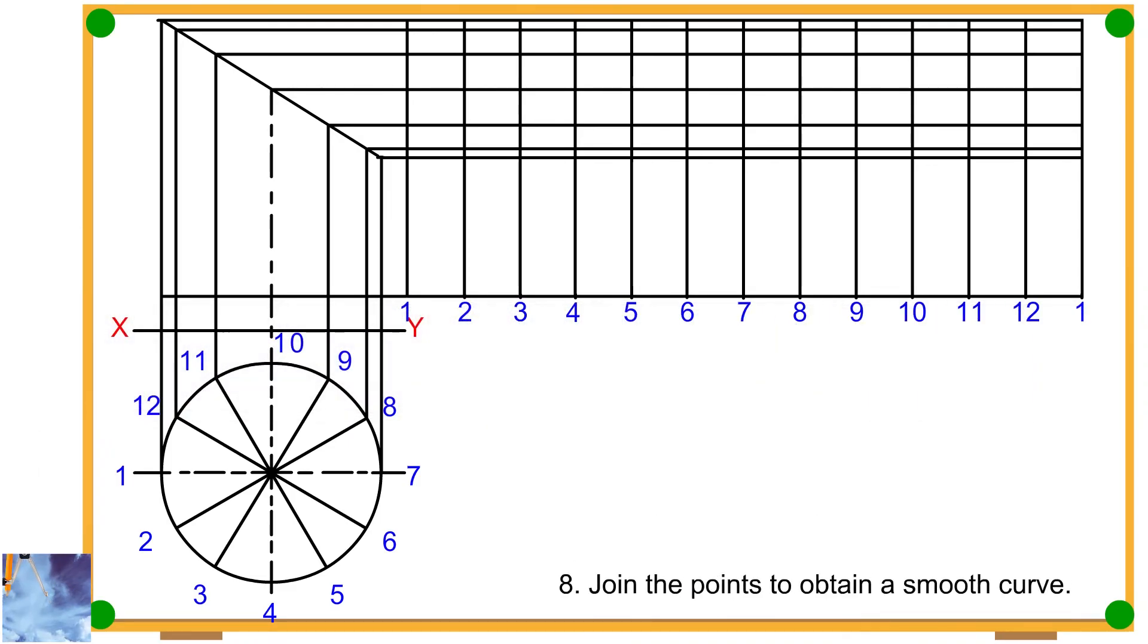Step 8: Join the points to obtain a smooth curve. During this step, make sure to locate each point at its appropriate place. If you plot even a single point incorrectly, your entire curve will be wrong. Watch carefully as I plot each point.